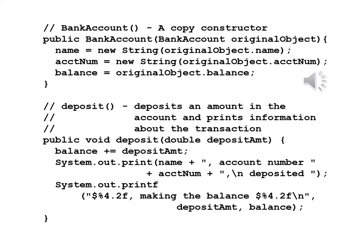The copy constructor is fairly straightforward. Public BankAccount, BankAccount originalObject: name equals new String originalObject.name, accountNum equals new String originalObject.accountNum, balance equals originalObject.balance. In this regard, we have copied over each of the properties into the new object.